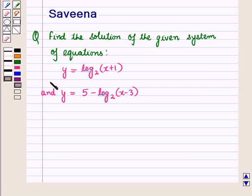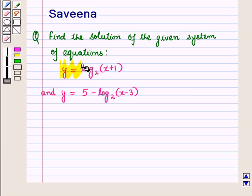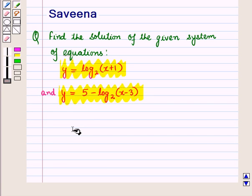Hello and welcome to the session. In this session we will discuss a question which says: find the solution of the given system of equations. The equations are y is equal to log(x+1) to the base 2, and y is equal to 5 minus log(x-3) to the base 2.